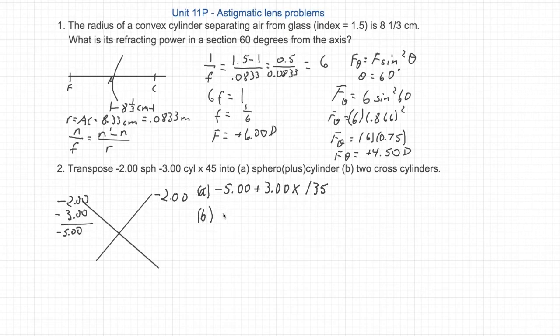The two cross cylinders, you could write plano minus 2 axis 135, or you can save ink by just writing minus 2 axis 135 combined with minus 5 axis 45.